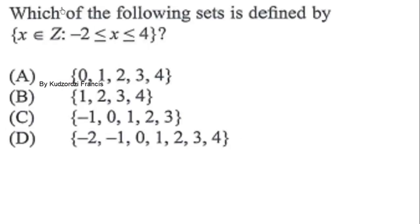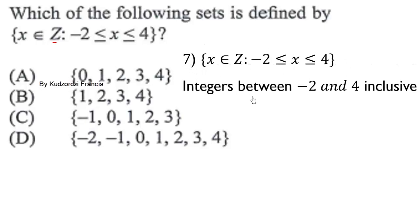Question 7: Which of the following sets is defined by x belongs to the integers Z, where -2 ≤ x ≤ 4? This means integers between -2 and 4 inclusive. Let's list them: -2, -1, 0, 1, 2, 3, and 4. Therefore the correct answer is this set.